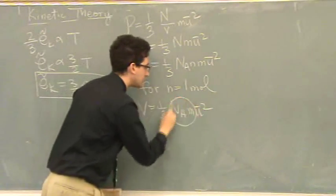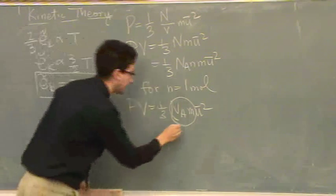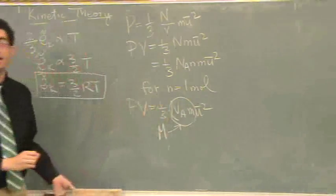What is N_A times M? Avogadro's number times mass is? It's a molar mass, yeah. So this is capital M, molar mass.